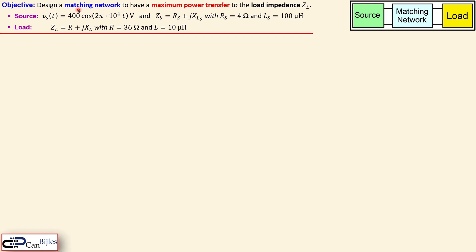Our objective is to design a matching network to achieve maximum power transfer to the load. The load is an impedance with a complex expression. We have a source connected through a matching network to the load. The source voltage is 400 cos(2π × 10⁴ t) volts, giving a frequency of 10 kilohertz and a peak amplitude of 400 volts.